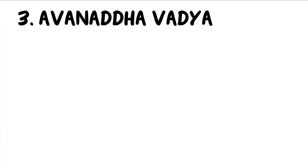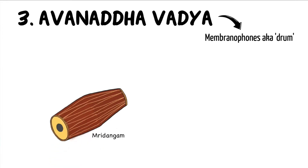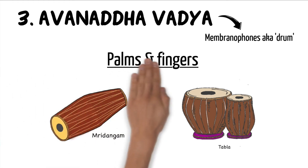Now moving on to the rhythmic instruments. Our third category is nata vadya, or membranophones, which comprises the different varieties of drums. For instance, we have the mridangam, which is predominantly used in Carnatic music. We also have the tabla, which is predominantly used in Hindustani music. These instruments are played using the palms and fingers.